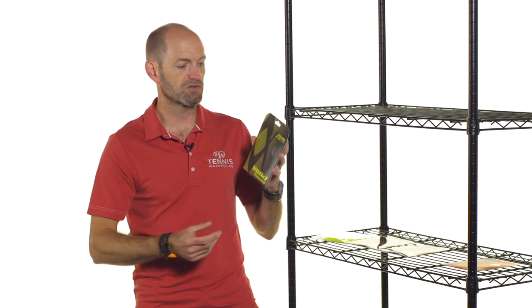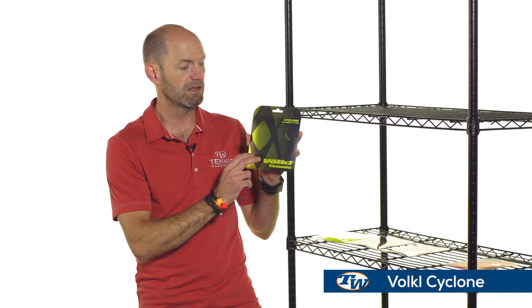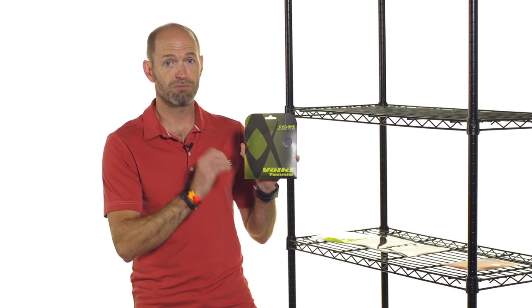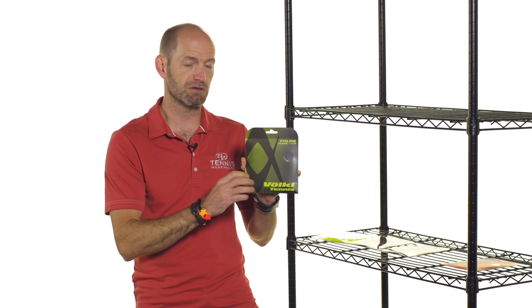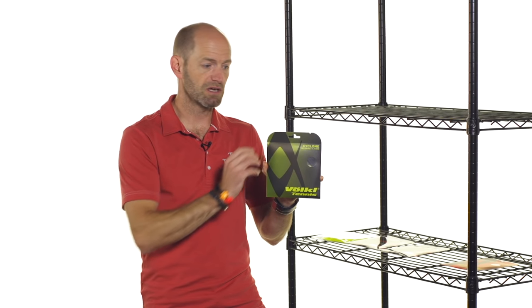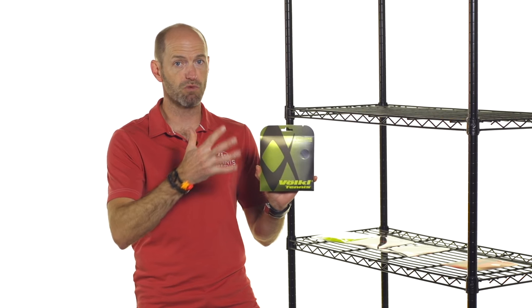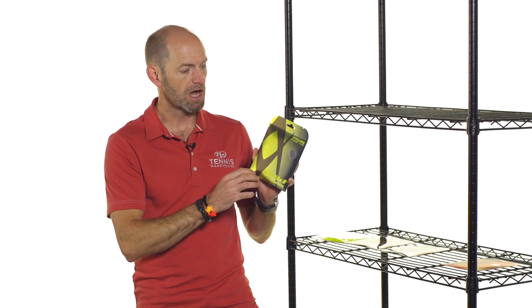Next up, one of my favorite strings is Volkl Cyclone, and this 18L gauge, so 18L really does offer tremendous bite. It's a thinner gauge poly, so if we are looking to come into the realm of poly and try a toe into poly out, this thin gauge is going to be much more elastic and forgiving than the thicker gauges of string.